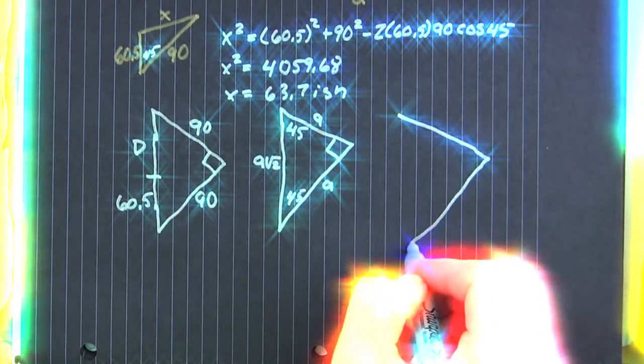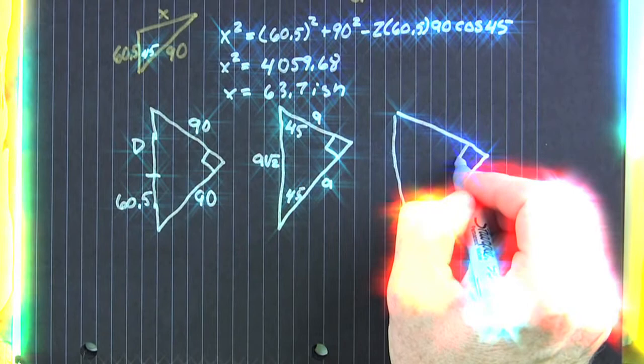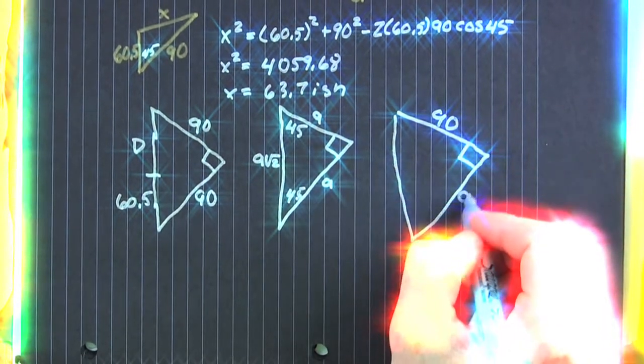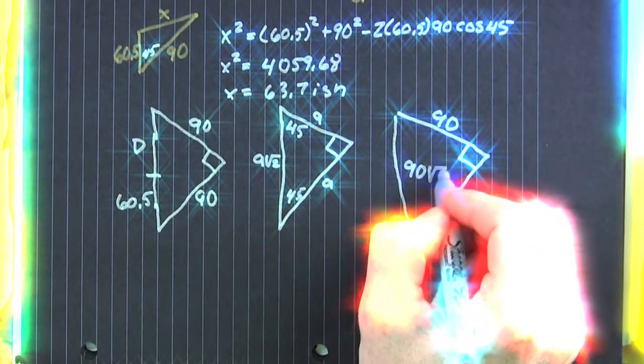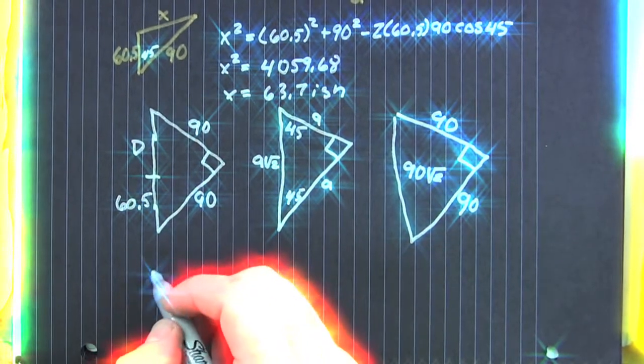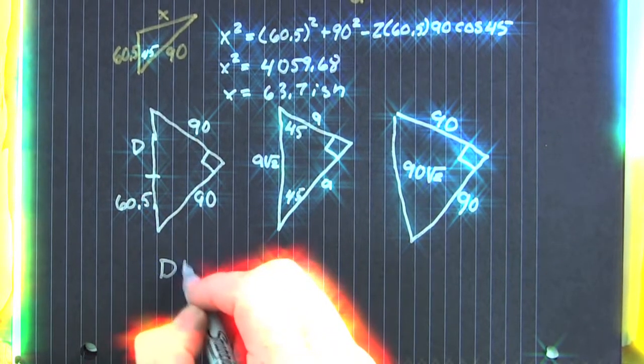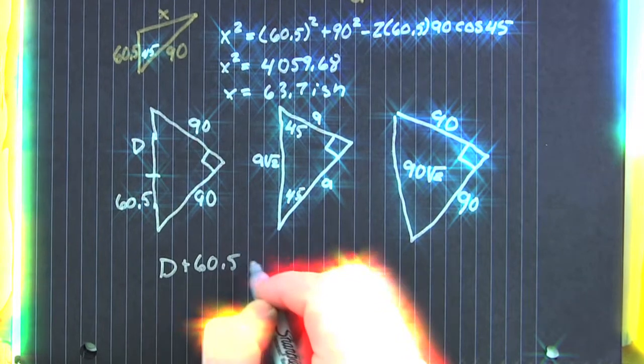Now, let's relabel with the configuration we have. 90 for one base path, 90 for another base path. That is going to be 90 root 2 from home base to second. That's how far the catcher would have to throw.